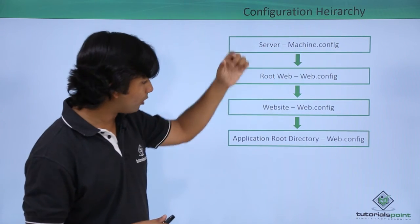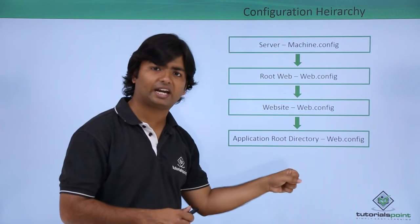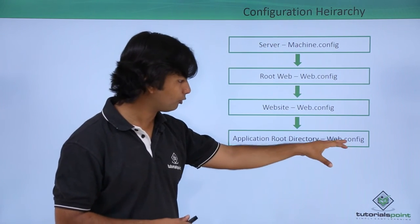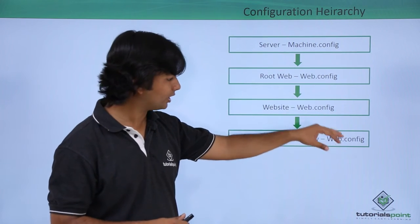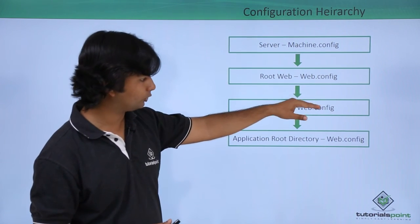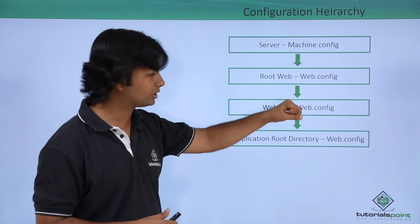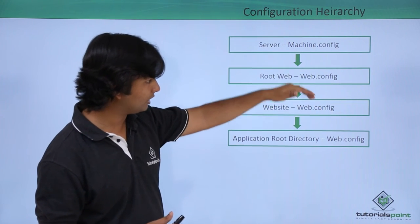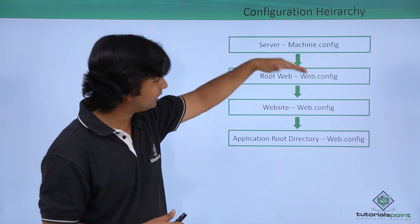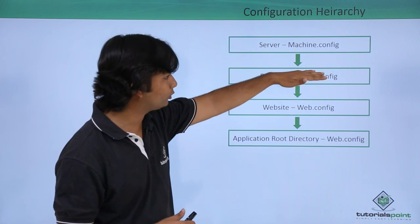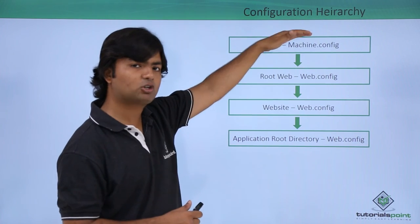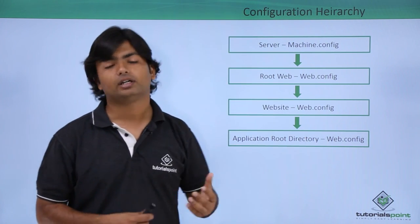This is how the hierarchy level works for configuration files. For a particular page residing inside a specific folder, it will primarily take settings from that folder's web.config. Settings not available there will be taken from the website-level web.config, then from the root web.config, and finally any remaining settings will be taken from the machine.config file on the server directly.